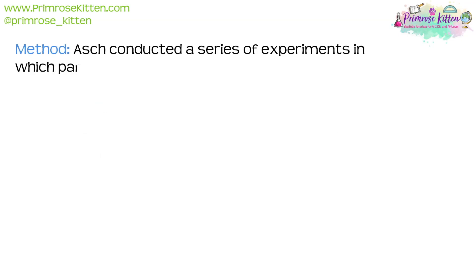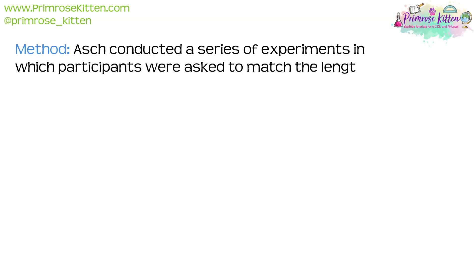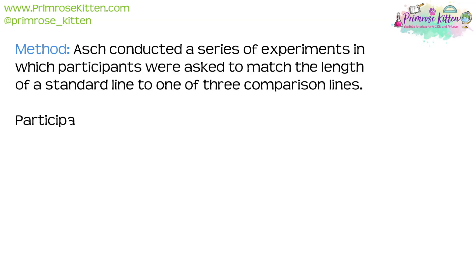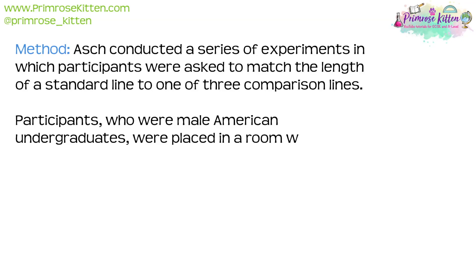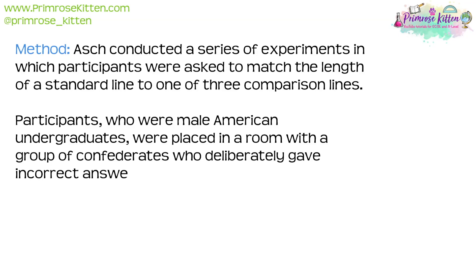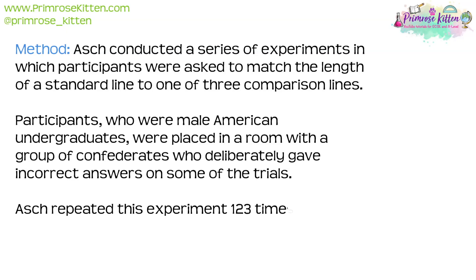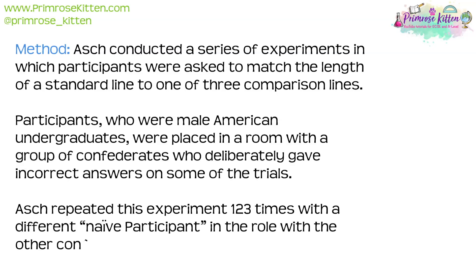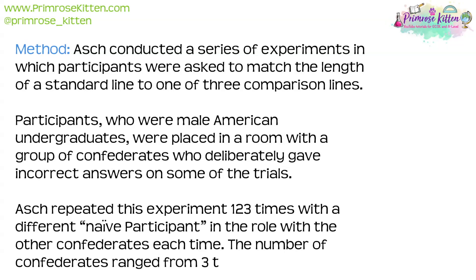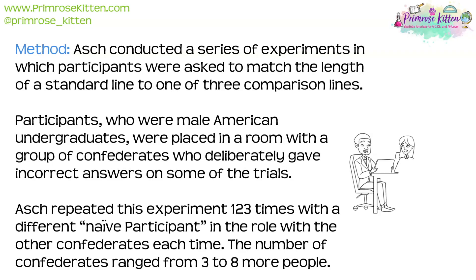The method: Asch conducted a series of experiments in which participants were asked to match the length of a standard line to one of three comparison lines. The participants, who were all male American undergraduates, were placed in a room with a group of Confederates who deliberately gave incorrect answers on some of the trials. Asch repeated this experiment 123 times with a different naive participant, with the number of Confederates ranging from three to eight people.